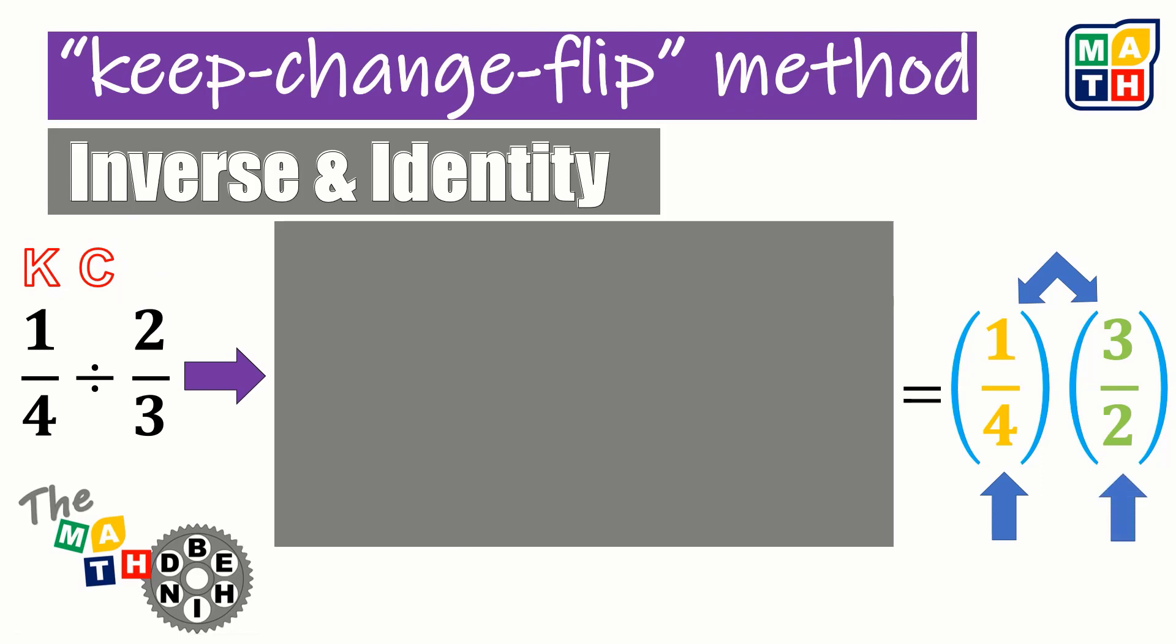And finally, the second fraction in the final form looks like a reciprocal or a flipping of the divisor in the given. Supposedly, it's 2 thirds. Right now, it's 3 halves.